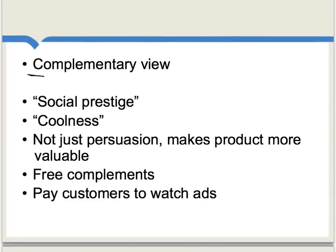Another theory is called the complementary view, which can be thought of as an attempt to modify the view that advertising is purely persuasive. In this view, the product and the ad are complements — they make each other more valuable. An advertisement attaches a quality, such as social prestige or coolness, to the product itself. Imagine a Nike sneaker associated with the image of a famous basketball star — wearing it makes you feel more cool and you value the product more. So it's not just a pointless changing of people's minds, but rather persuading people by actually making your product more valuable and appealing to use.